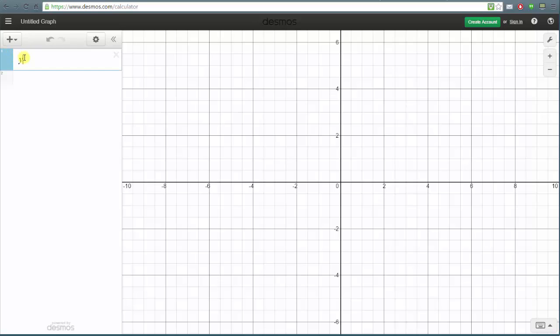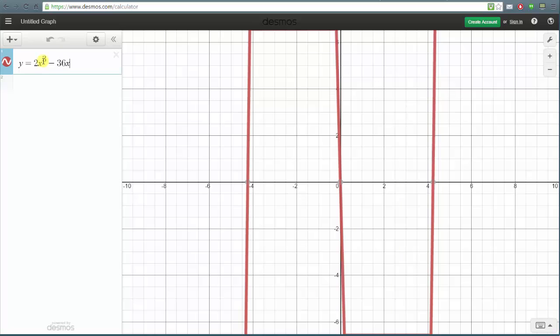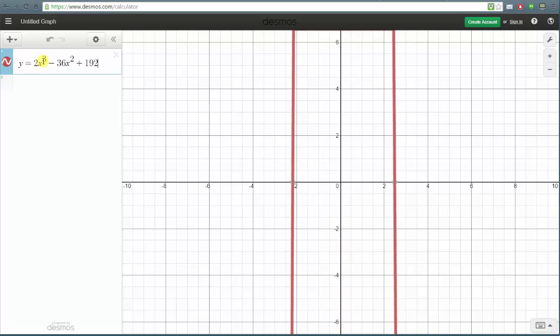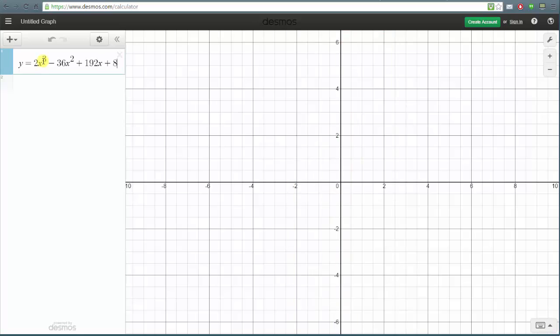So we'll enter y equals and then for 2x cubed we'll enter 2x and then shift six puts the cursor in the exponent position and now we enter three. To exit the exponent we press the right arrow and then minus 36x squared. To enter x squared we press x shift 6 2 right arrow and then we have plus 192x plus 8.